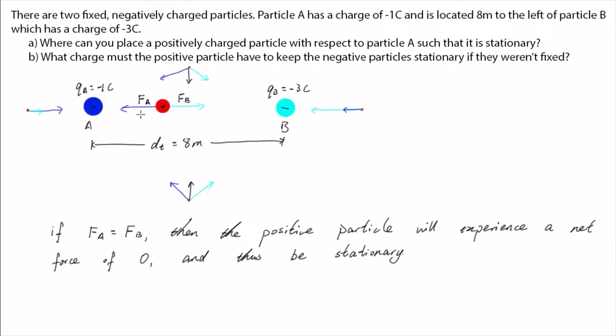So let's call the distance between the positive particle and particle A, dA. Which means the distance between the positive particle and particle B will be 8 minus dA.